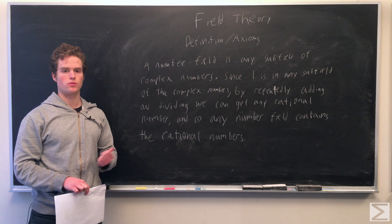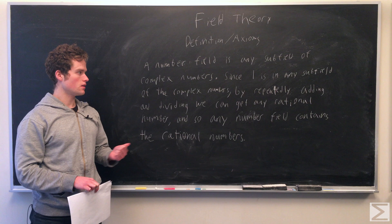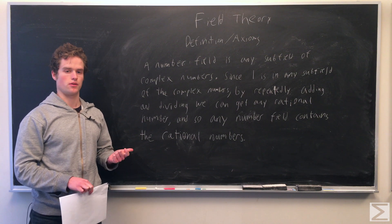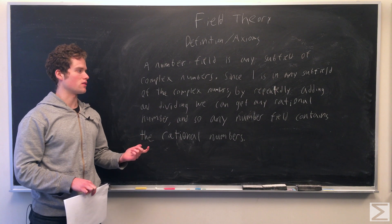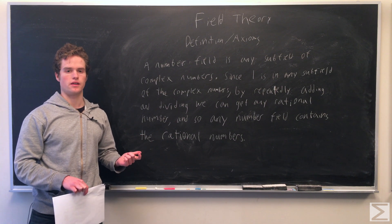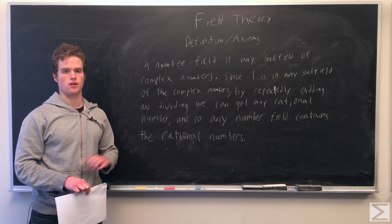And since we have any integer, we can multiply and divide them. By dividing them, we can get any rational number. Taking the inverse, we can get any negative rational number. So we have all the rational numbers in any number field, any subfield of the complex numbers.